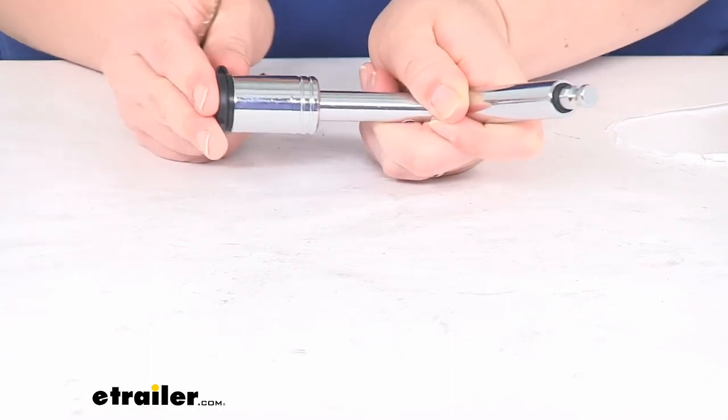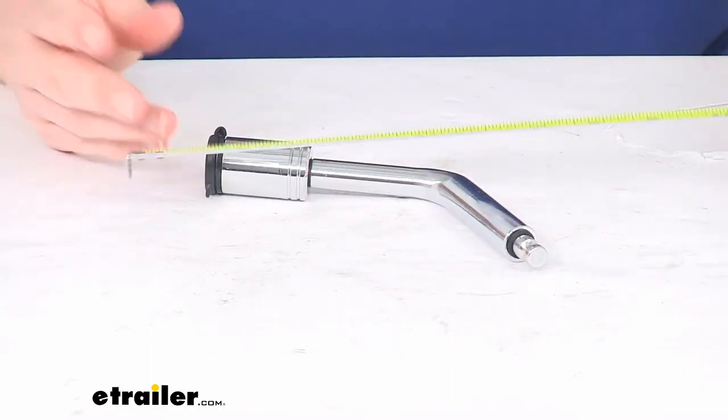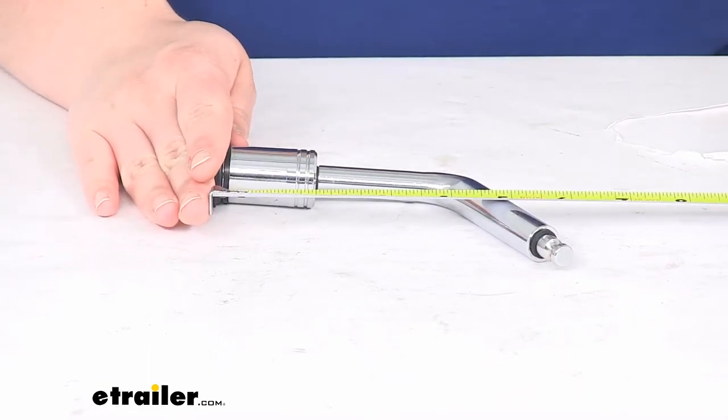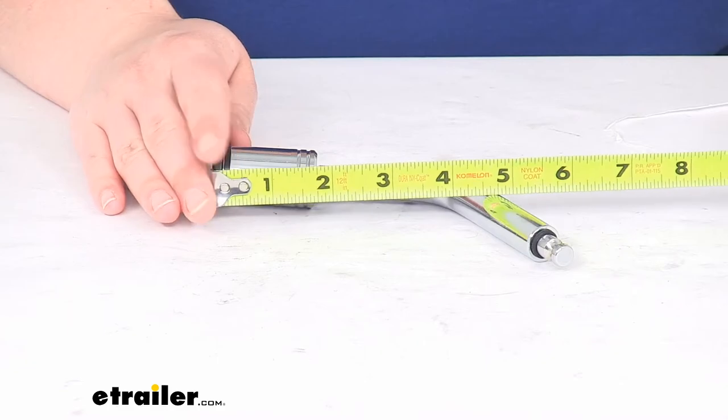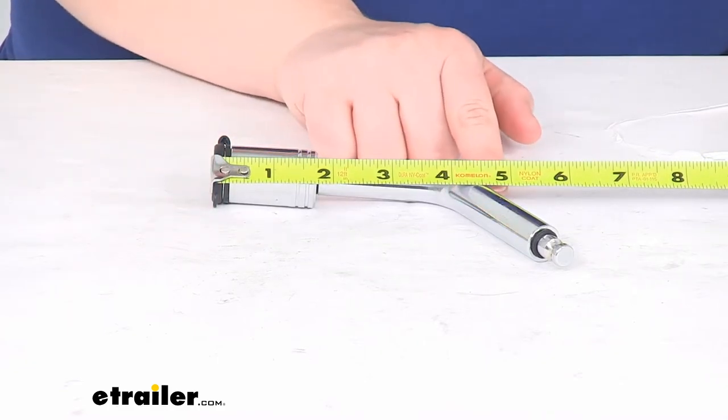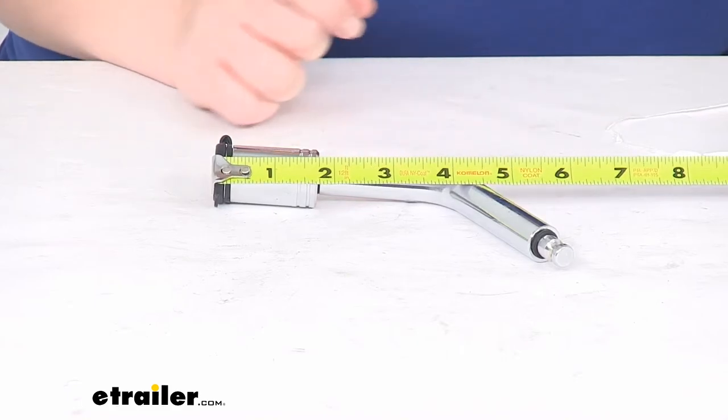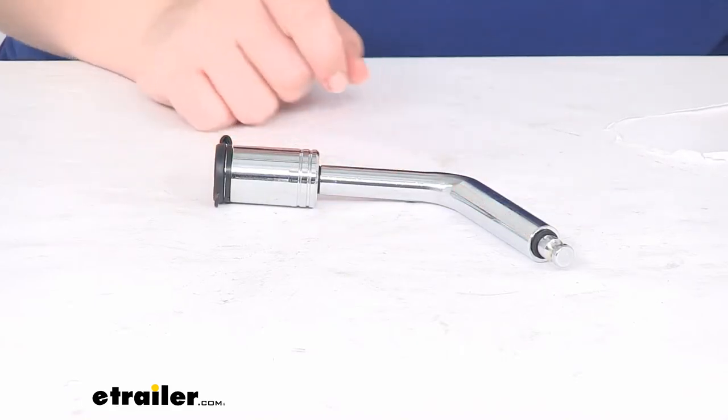And then if we flip it over to the Class 2 side, now it's just about six inches long. And to that same part of the bend, it's about four and three quarters rather than five inches. So just a little bit shorter on this side.